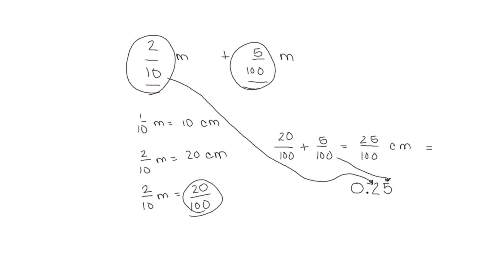We could break this down into a number bond to show the two parts. We have two tenths and we have five hundredths. The two here represents tenths and the five represents hundredths.